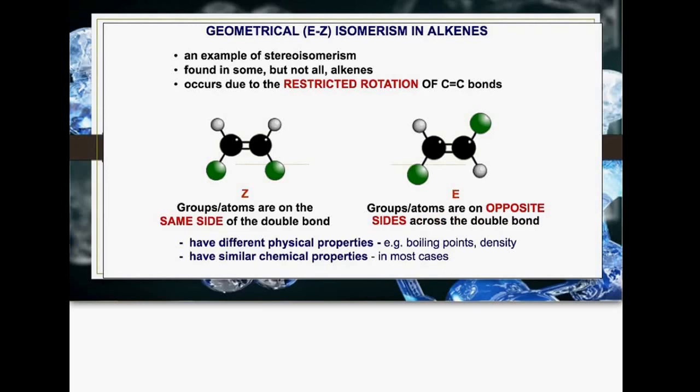The different isomers can have different physical properties, different boiling points, etc. If you think about this, if these are chlorine atoms, they're electronegative. If they're both on this side, then this side will become slightly more negative, whereas this is balanced out. Therefore, this will have more dipole-dipole interactions, requiring more energy to break apart, therefore having a higher boiling point. Similar chemical properties, though, in most cases.